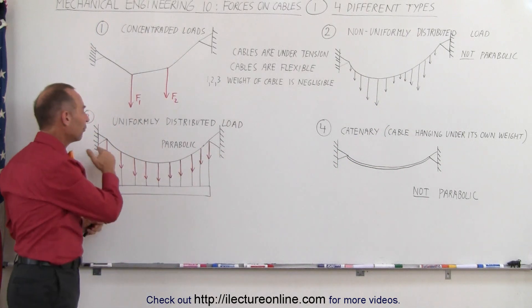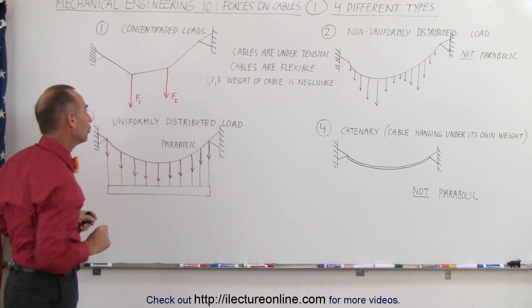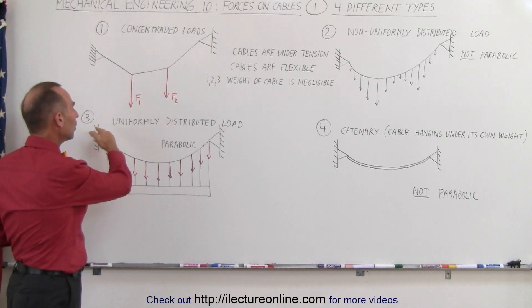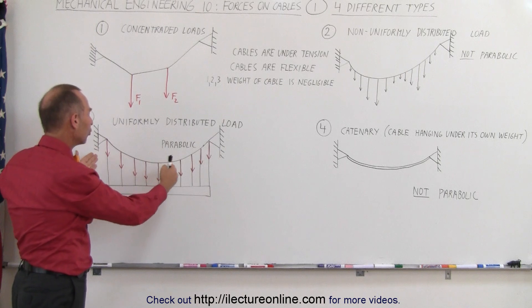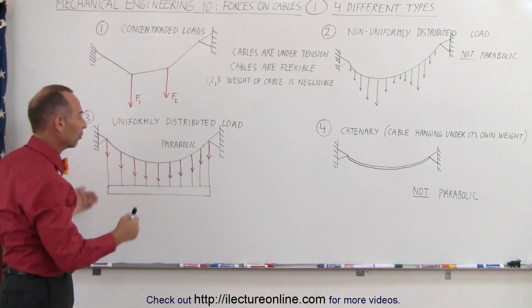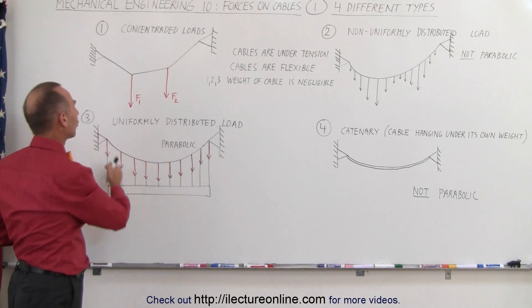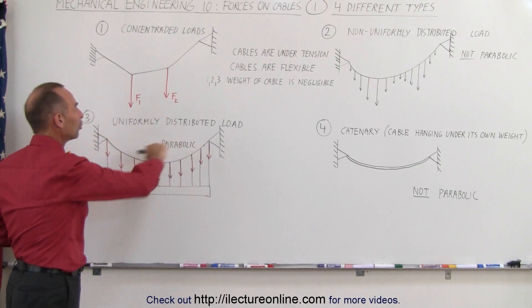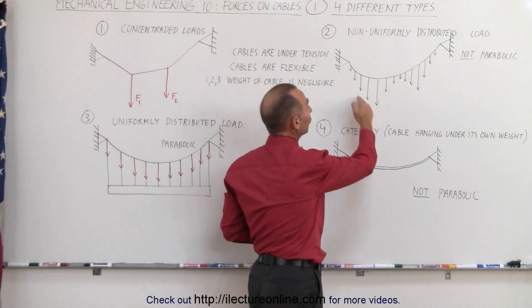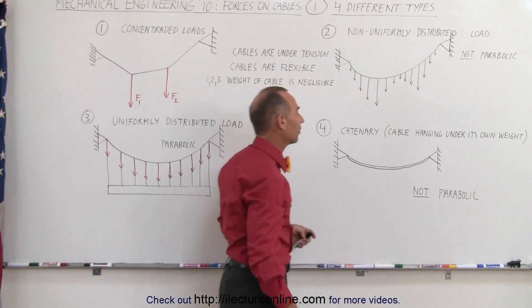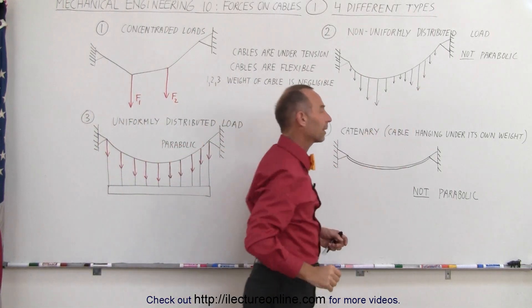The third case is where the forces are uniform, meaning the forces are all the same magnitude. Because of that, the cable will have a parabolic shape. This is typical where we have cables supporting bridge sections, and the weight distribution of the bridge is uniform, therefore the forces on the cable are uniform. If the bridge sections do not have uniform weight, then of course you have more of a situation like this. Here the shape will be parabolic, there the shape will not be parabolic.